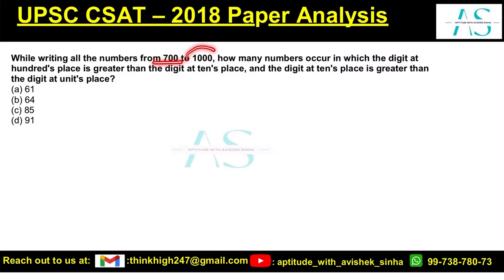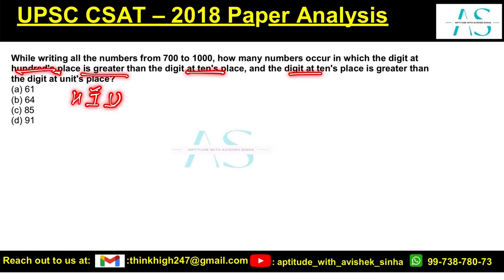From all the numbers from 700 to 1000, how many numbers occur in which the digit at the 100th place is greater than the digit at the 10th place, and the digit at the 10th place is always greater than the digit at the unit place? So these are how many numbers — this is what we are looking out for.